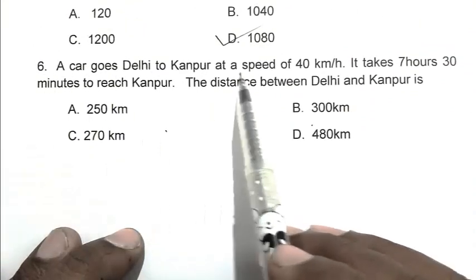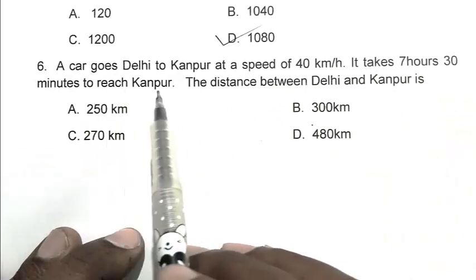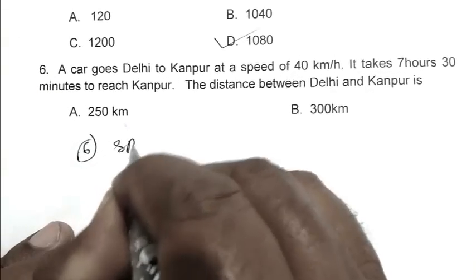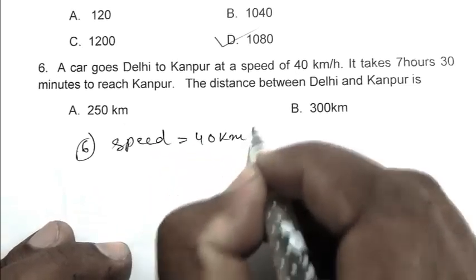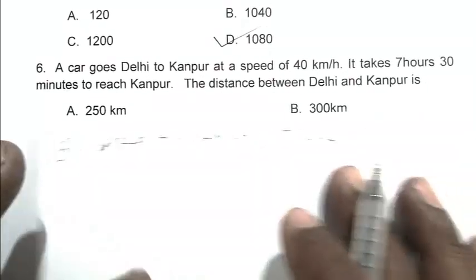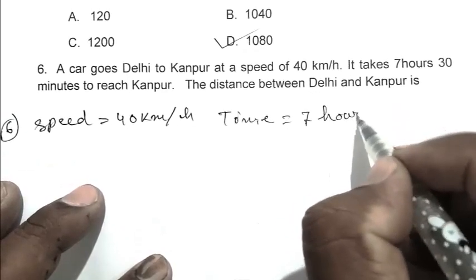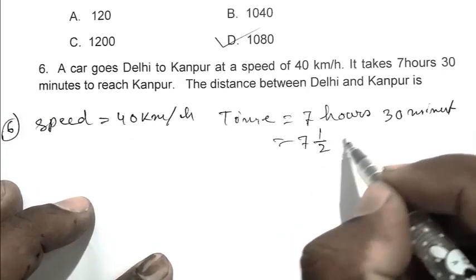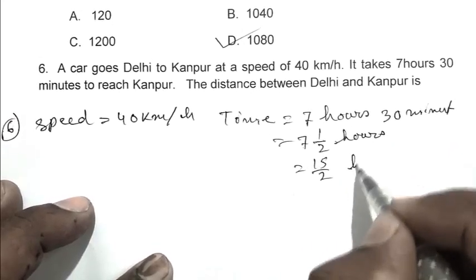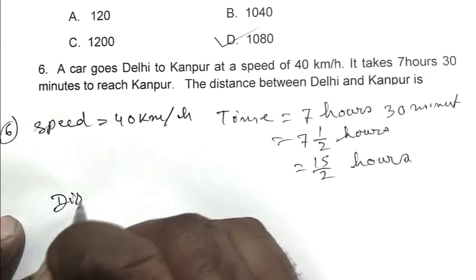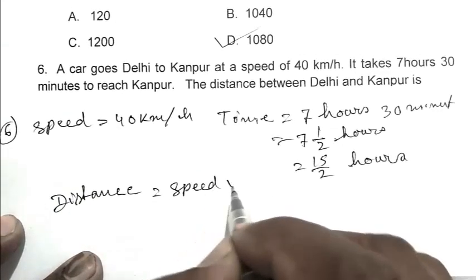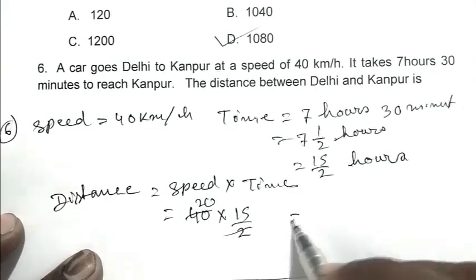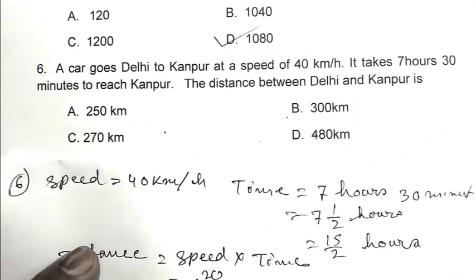Question number 6. Akar goes from Delhi to Kanpur at a speed of 40 km per hour. It takes 7 hours 30 minutes to reach Kanpur. The distance between Delhi and Kanpur is. So 7 hours 30 minutes becomes 7 and 1/2 hours, that is 15 by 2 hours. Distance equals speed multiplied by time, so 40 multiplied by 15 by 2 equals 300 km. So B is the right answer.